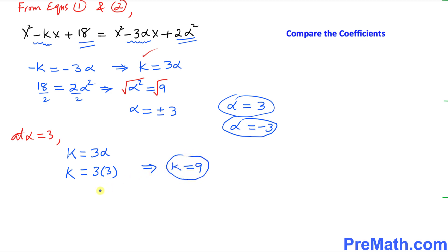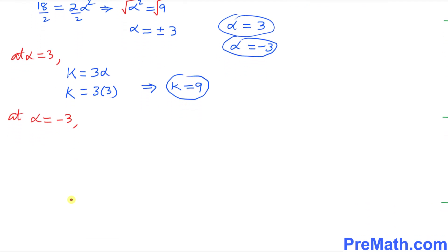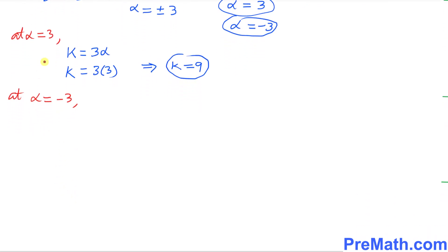And how about if I say k at alpha equals to negative three? So that is going to give us, we know k again equals to three alpha. This time alpha is negative three. So three times negative three, which is equal to k.